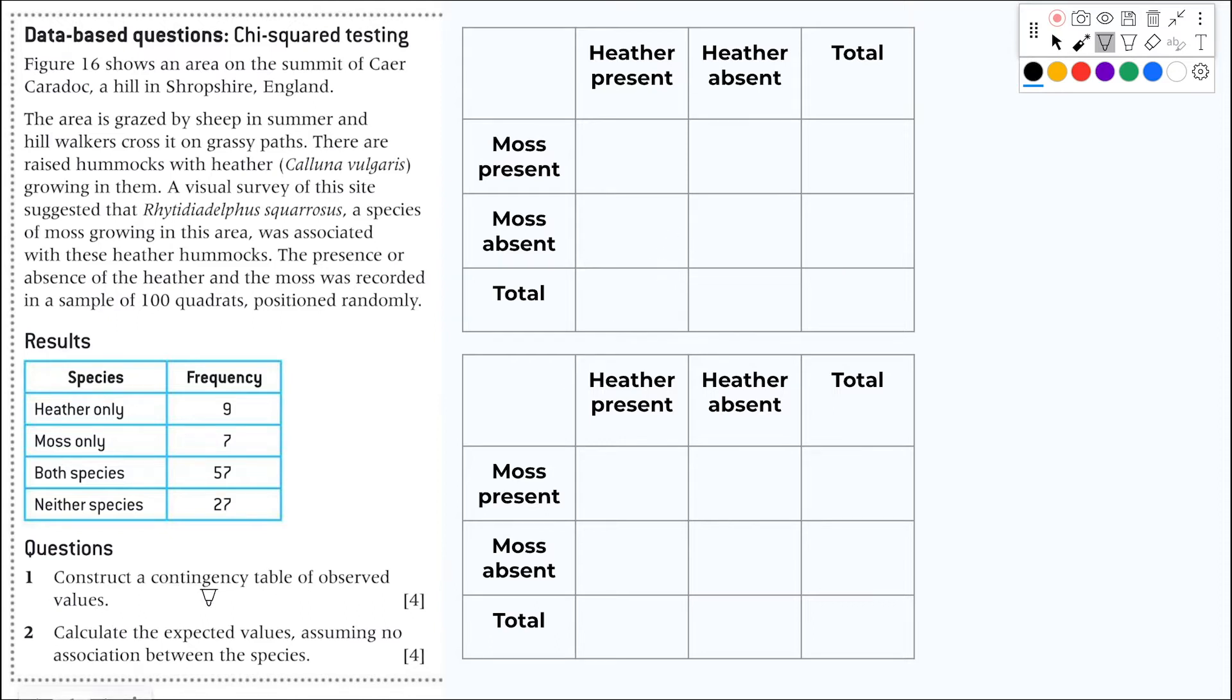The first question here says construct a contingency table of observed values. So a contingency table is this table here. You will have species present, species absent, species present, species absent, and the totals here on the sides. So if I have heather present and moss present, that means both species, that's 57.